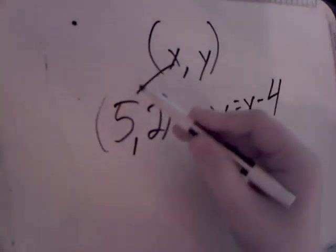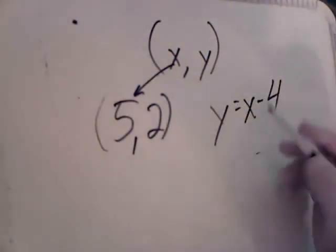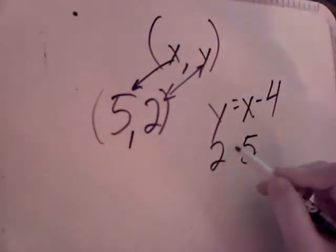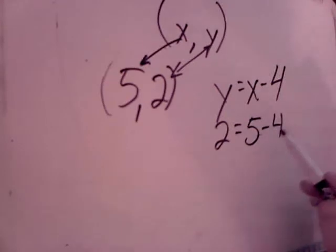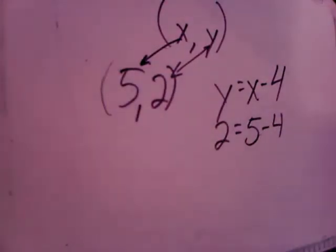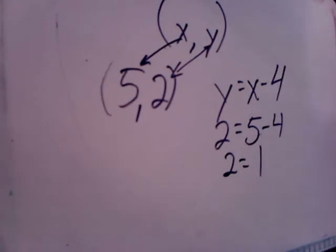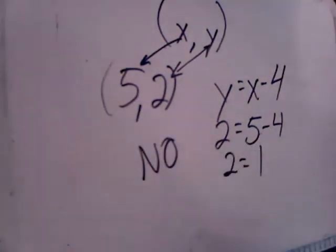Our x number is the first number, so we're going to put in 5 for x. We're going to put in our y number, which is 2. Copy down everything else. Is 5 minus 4 equal to 2? Well, 5 minus 4 is 1. So our answer is no. We did not hit anything on this particular attempt.